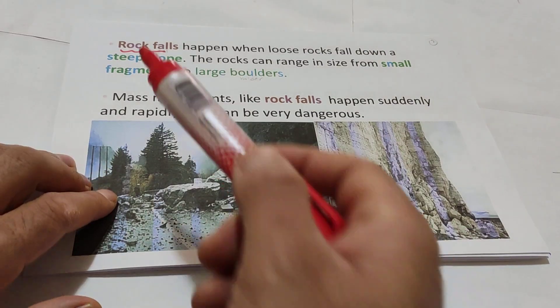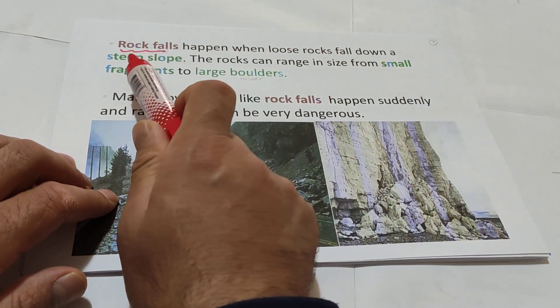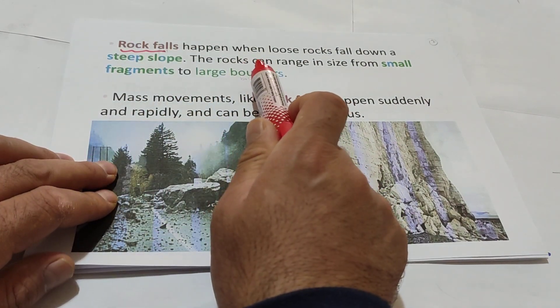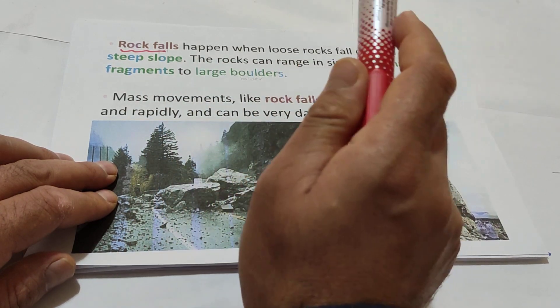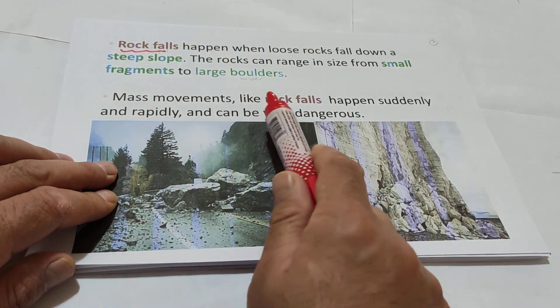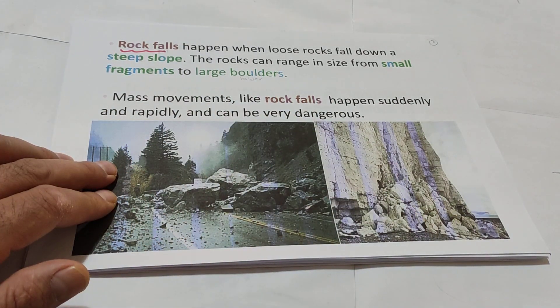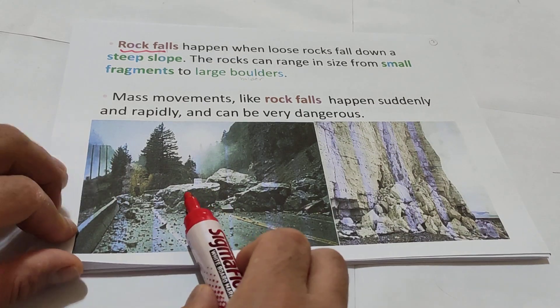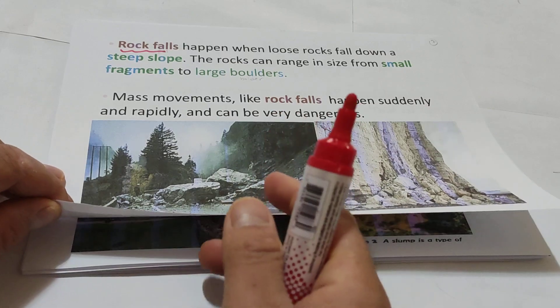Rock falls happen when loose material falls down a steep slope. Rocks can range in size from small fragments to large boulders. Mass movement like rock falls happen suddenly and rapidly and can be very dangerous. Because of course, it will destroy roads, human beings, cars, animals.